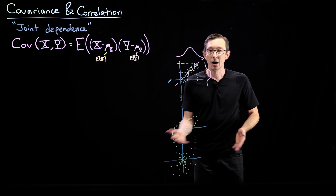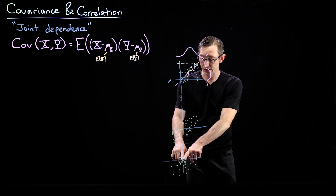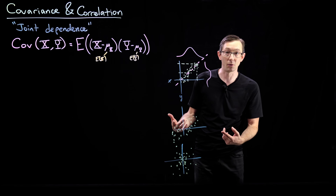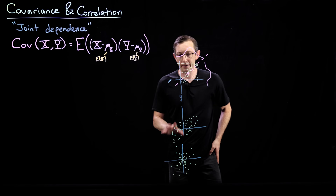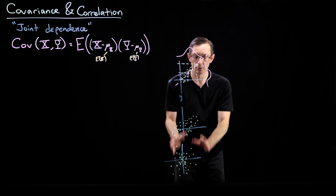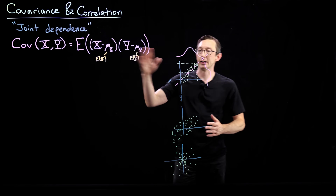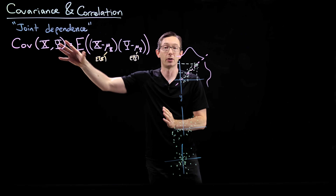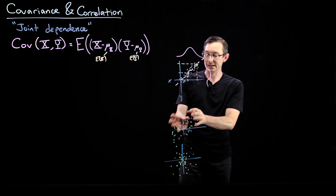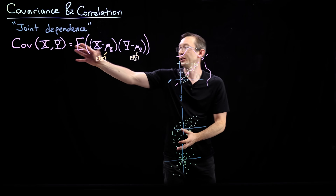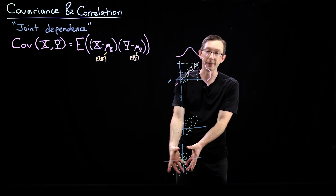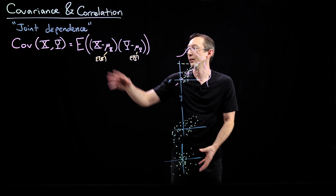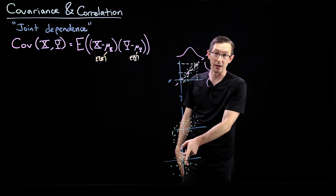I encourage you to generate these kinds of point clouds in Python and compute this sample expectation — average over all your data points — and convince yourself that this correlation is higher than the next, which is higher than zero covariance. Pictorially: big slope and tight spread means large covariance; lower slope and fatter spread means lower covariance; no preferred direction and lots of spread means zero covariance.